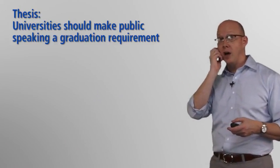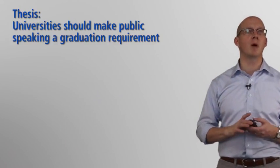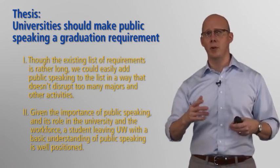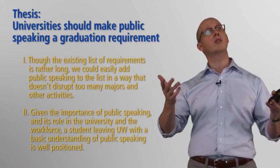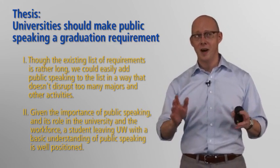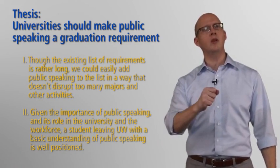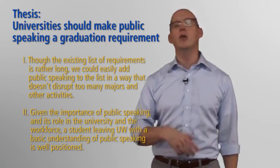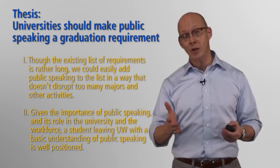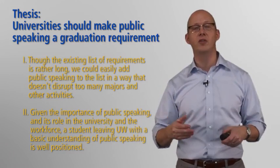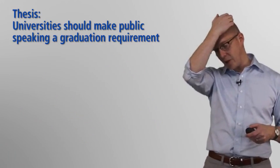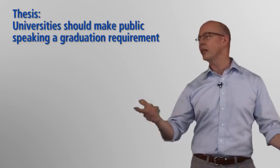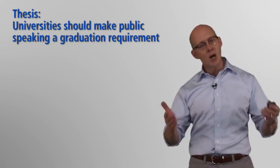So if you take a look at this sample thesis here: Universities should make public speaking a graduation requirement. And I'm just staying with that as a general example here. So here are the two main points. Though the existing list of requirements is rather long, we could easily add public speaking to the list in a way that doesn't disrupt too many majors and other activities. And, lest I forget, given the importance of public speaking and its role in the university and the workforce, a student leaving a university with a basic understanding of public speaking is well positioned indeed. So those are way too long. They're crazy long. They might be accurate, but we want to get more concise. So if you take a look at these now, what I want you to do is, on a sheet of paper or just mumbling to yourself, try to get to the core idea of these points in like five to ten words. Much more concise phrasing on that.